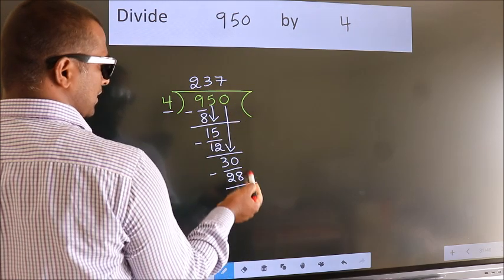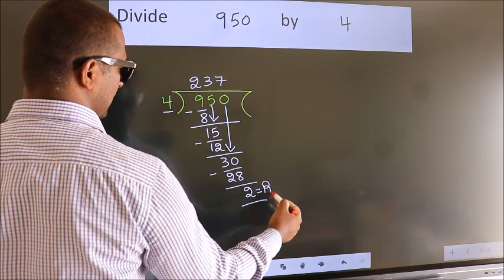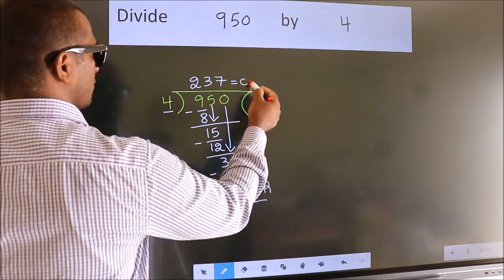No more numbers to bring down, so we stop here. This is our remainder. This is our quotient.